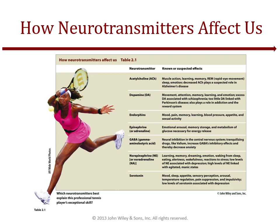Too much dopamine can lead to schizophrenia; too little can cause Parkinson's disease. But dopamine has other actions as well — as you can see on the slide, it helps with attention, movement, memory, and learning, and plays a role in how your emotions function. It also helps within our reward system, boosting us when needed and giving us that pleasure and contentment feeling.